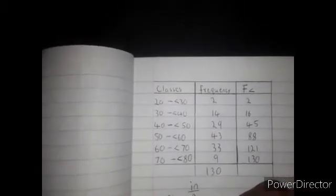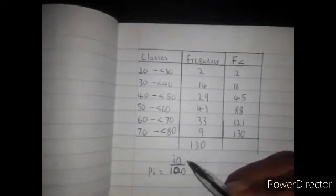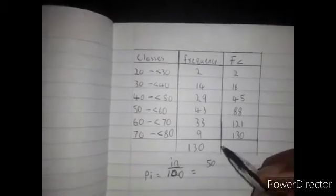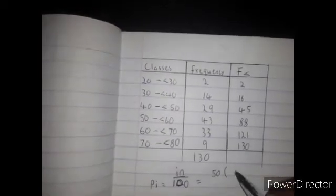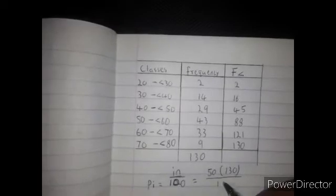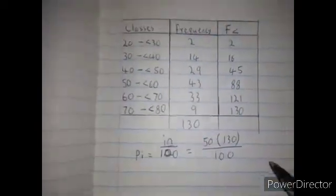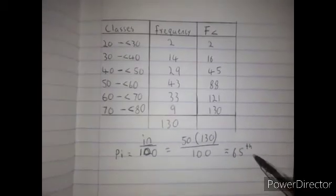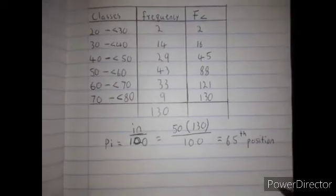The percentile position is i times N over 100. The percentile is out of 100, that's why we divide by 100. Here we are calculating the 50th percentile, and N is 130, so the answer is 65. Percentile 50 is at the 65th position.